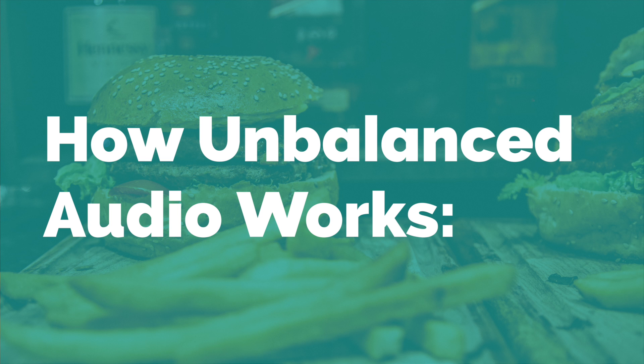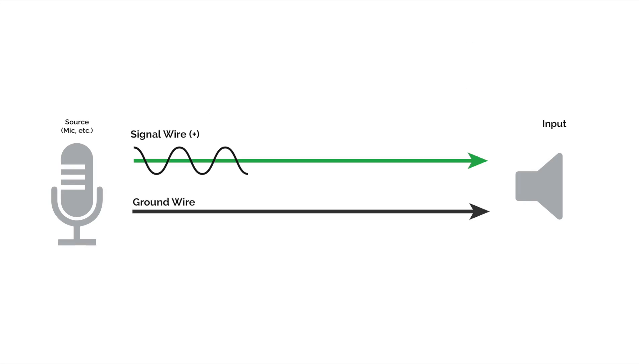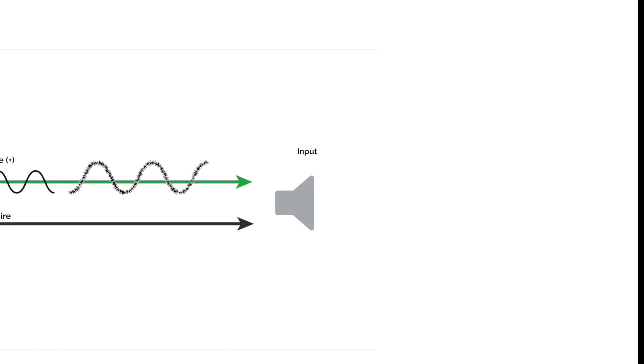By cleaner I mean without any noise or interference. Now, this is an unbalanced quarter-inch TS audio cable. The fact that it's unbalanced means that as the audio signal goes down the line, it's susceptible to picking up noise and interference. There are two wires inside an unbalanced cable: a signal wire, which carries the signal, and a ground wire, which acts as a reference point. However, the ground wire also acts like an antenna and can pick up unwanted noise along the way.